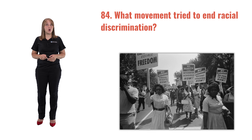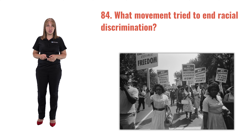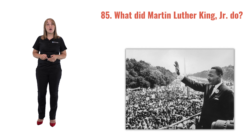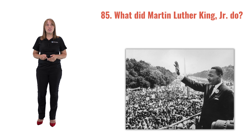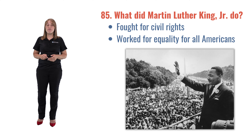Question 84: What movement tried to end racial discrimination? The civil rights movement. Question 85: What did Martin Luther King Jr. do? He fought for civil rights and worked for equality for all Americans.